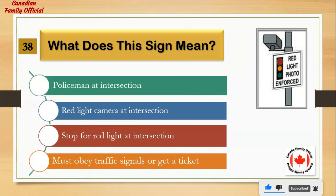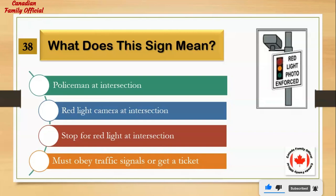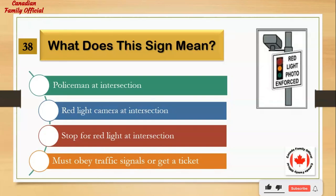What does this sign mean? Number 1: policeman at intersection. Number 2: red light camera at intersection. Number 3: stop for red light at intersection. Number 4: must obey traffic signals or get a ticket. And the answer is: red light camera at intersection.